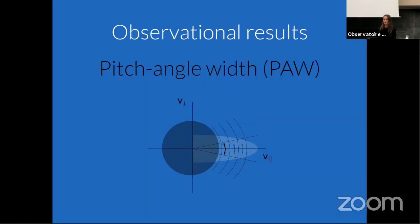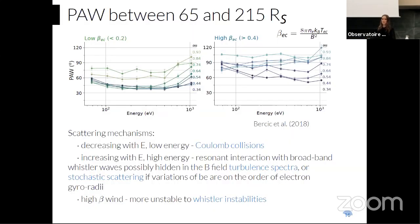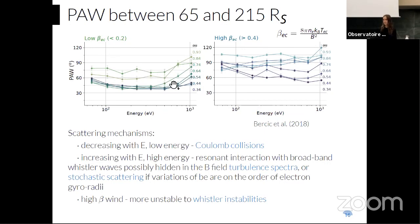Observational results from Helios data show pitch angle width for low-beta and high-beta solar wind at different distances. Contrary to the simple model's prediction of focusing, we observe broadening of the strahl with radial distance in both wind types.